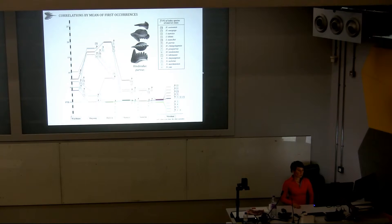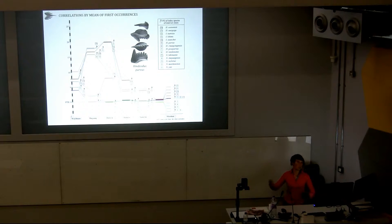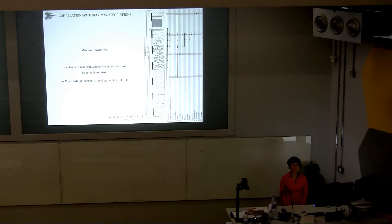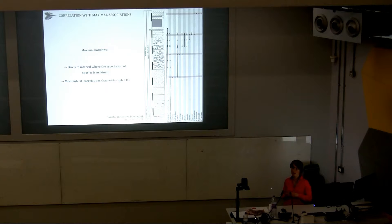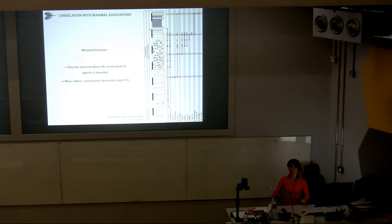In order to circumvent this diachronous correlation — which is due to the lag between the first appearance of a species and its first local occurrence in a section, caused by preservational bias, ecological exclusion, and sampling bias — rather than first occurrences, we focused on maximal associations. Within one section, these are called maximal horizons. This is an example of the section at Yuduan, where I identified four maximal horizons. They are discrete assemblages of maximal associations of species, and they make it much more robust to correlate different sections together.